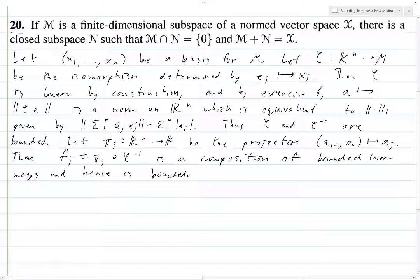And hence is bounded, and this holds for all j. Furthermore, fⱼ maps from M to K.